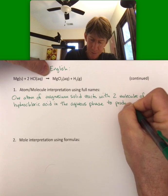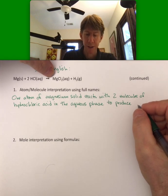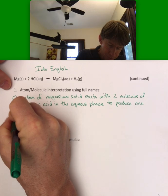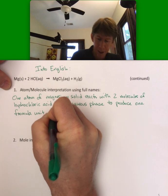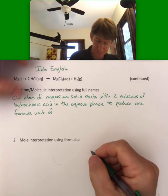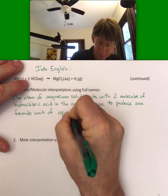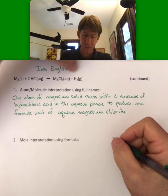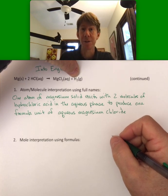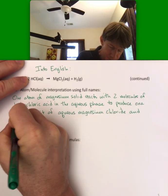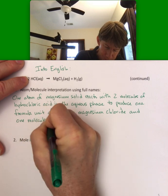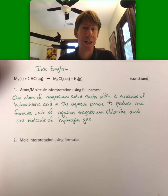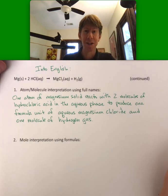One formula unit. Remember, this is an ionic compound, and ionic compounds have formula units. To produce one formula unit. And here we'll do it, aqueous magnesium chloride. And one molecule of hydrogen gas. And you could just write hydrogen, but we know that hydrogen is a gas. That is a full sentence, so we'll even put a period at the end of it.